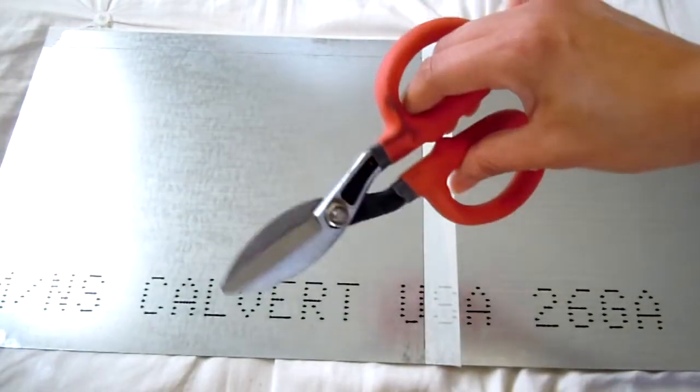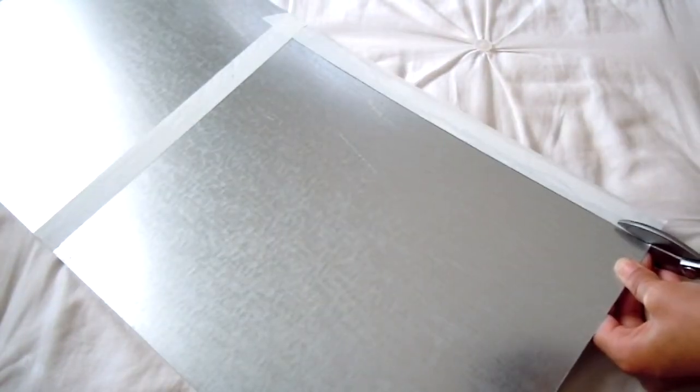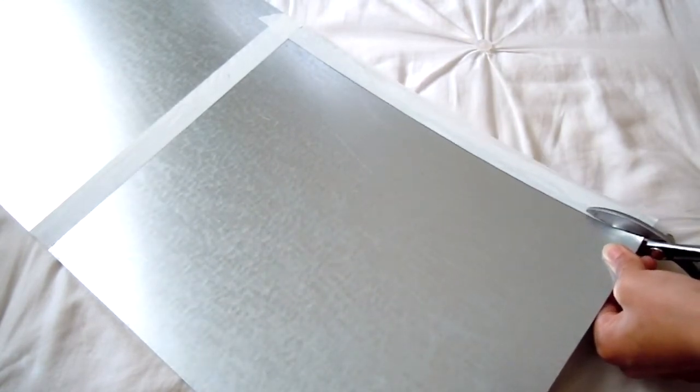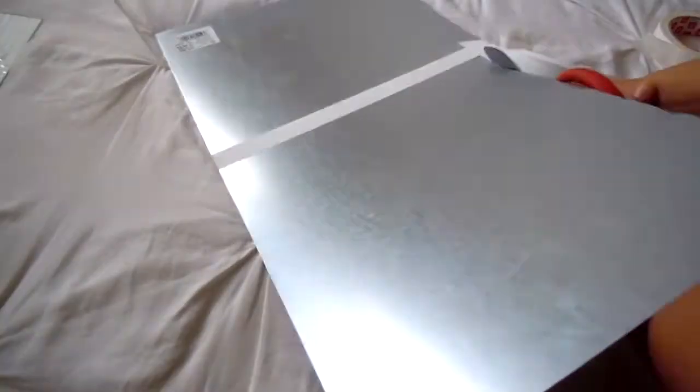Then just take your metal snips and start cutting. Make sure when you're doing this that you're really careful because since the sheet metal is really thin, it can very easily cut your hand. I mean, during this process, I cut my hand like twice, like on my knuckles and it was really, really painful. So please be careful.